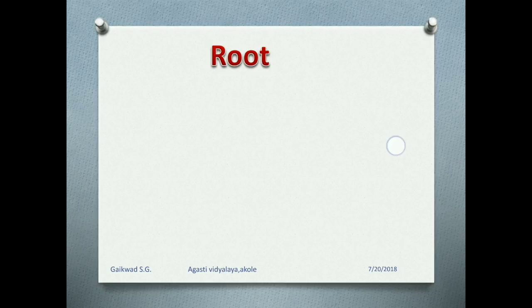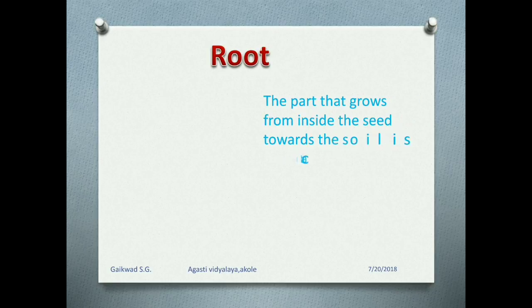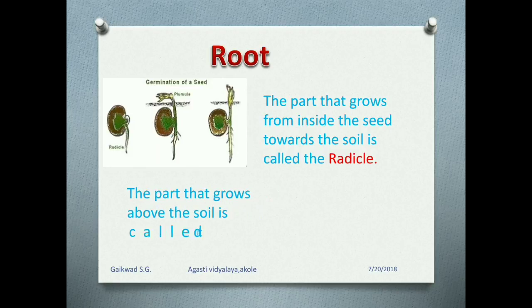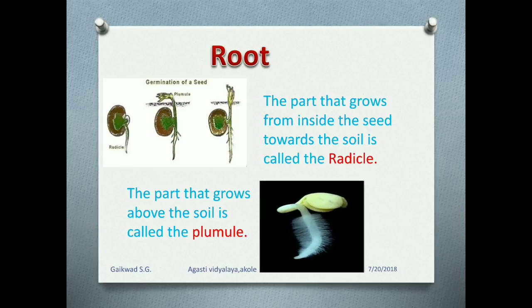Root. The part that grows from inside the seed towards the soil is called the radicle. And the part that grows above the soil is called the plumule. The plumule grows above the soil and the radicle grows towards the soil.